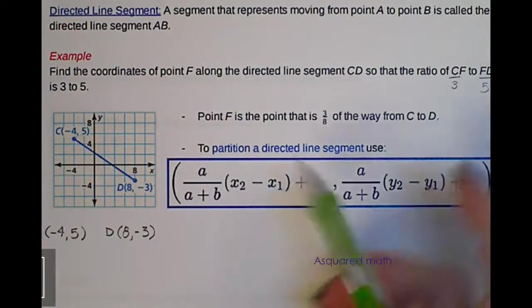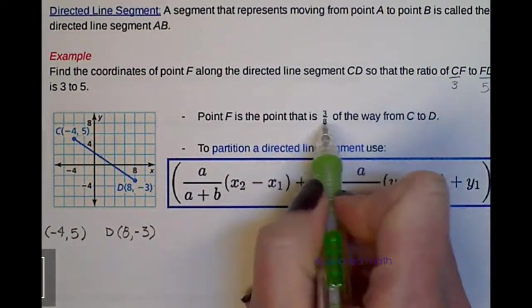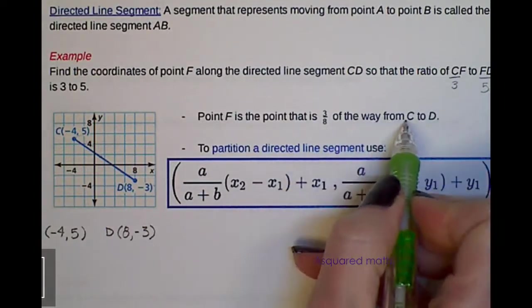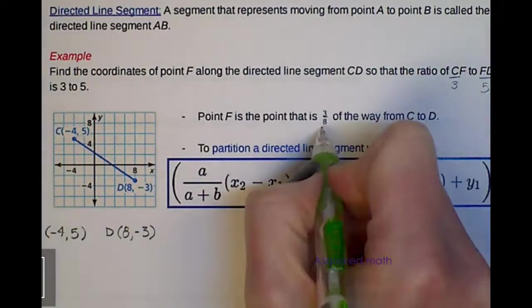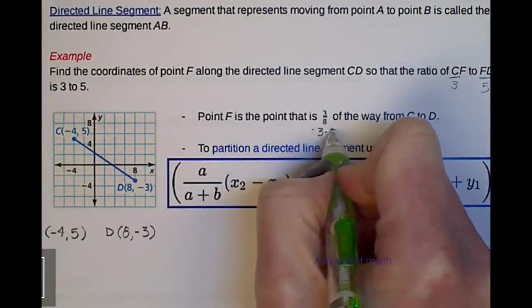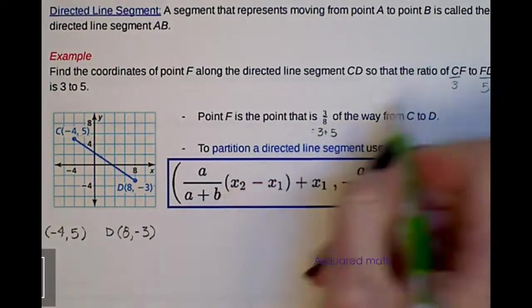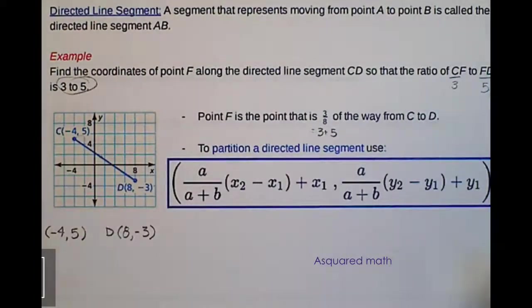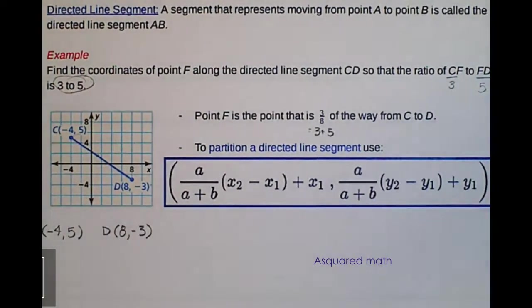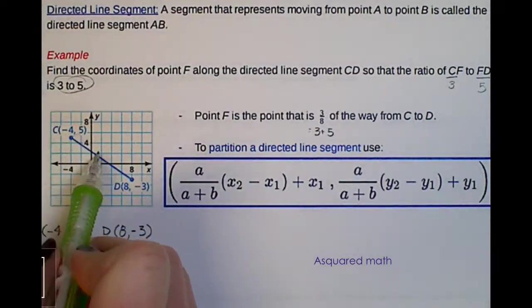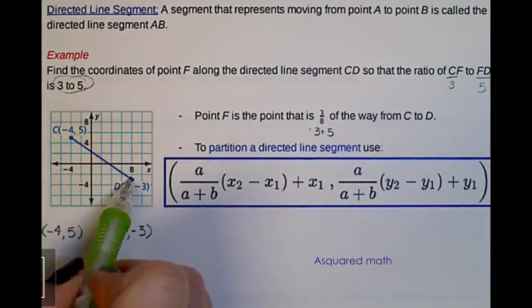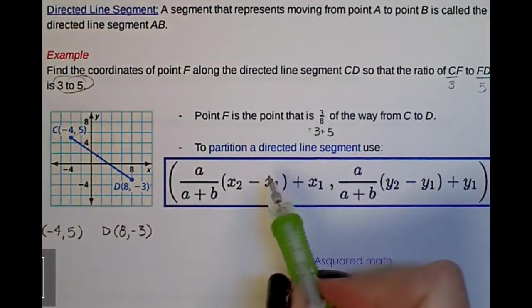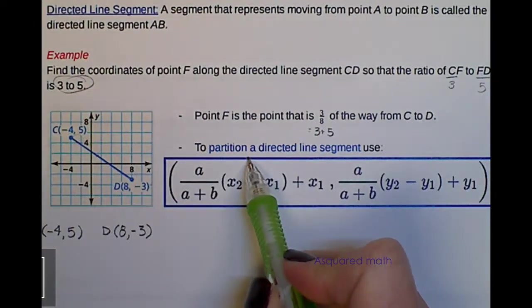So point F is the point that is 3 eighths of the way from point C to D. And I got 8 because I added my 3 plus my 5, and that comes from my ratio of 3 to 5. So we are looking for something that is 3 parts from C and 5 parts to D. So we're going to partition this directed line segment.